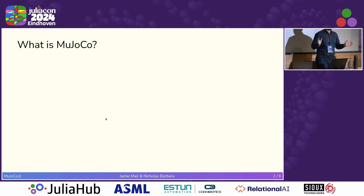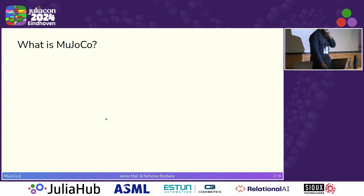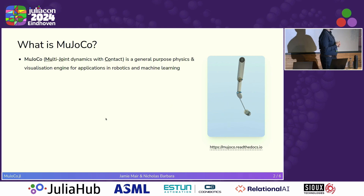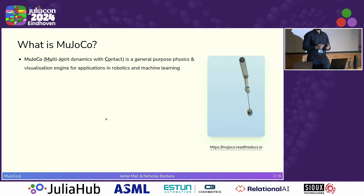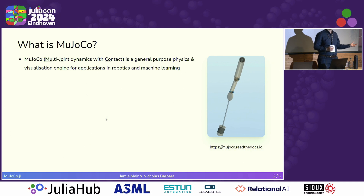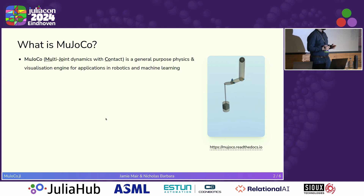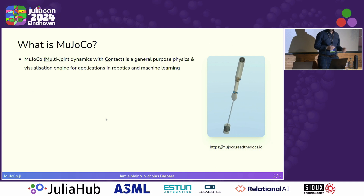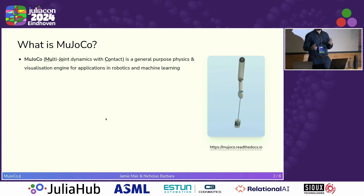For those who might not know what MuJoCo is, I'll just spend a few seconds explaining it. MuJoCo is a physics simulation engine. It also has a lot of tools built in for visualization, and its primary focus is developing applications in robotics and machine learning, particularly reinforcement learning.